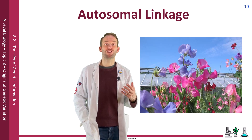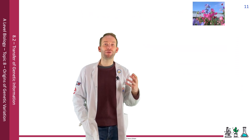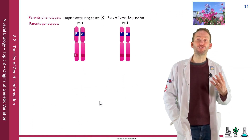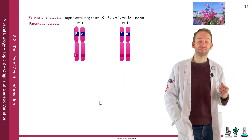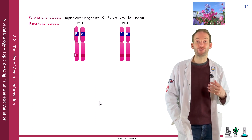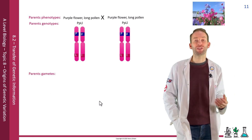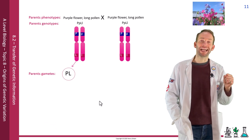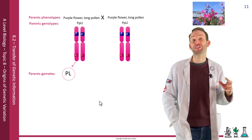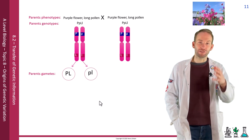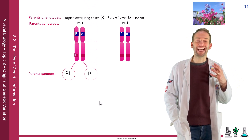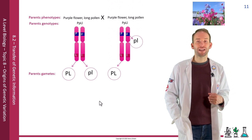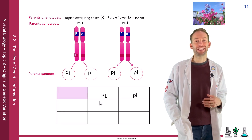For example, in sweet peas, the gene for flower colour is linked with the gene for pollen grain shape — they're carried on the same chromosome. With heterozygous parents PpLl × PpLl, rather than producing four gametes each, they can only produce two gametes each: PL or pl. This results in only two possible combinations, giving the 3:1 ratio.